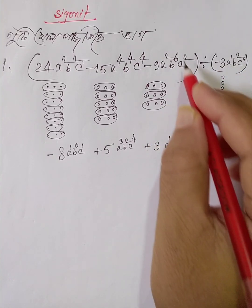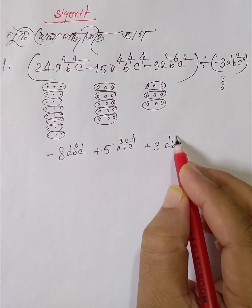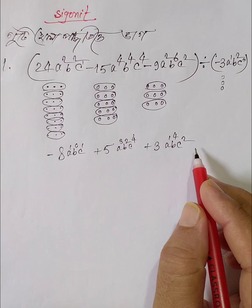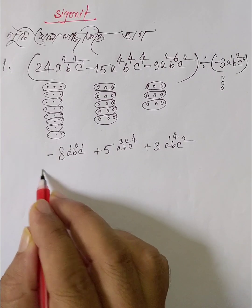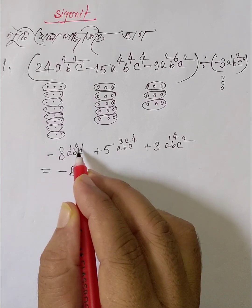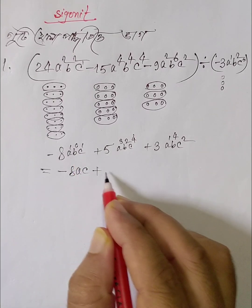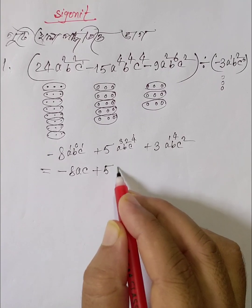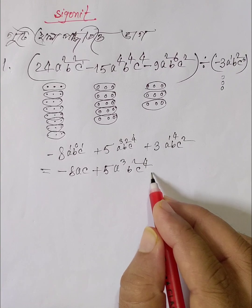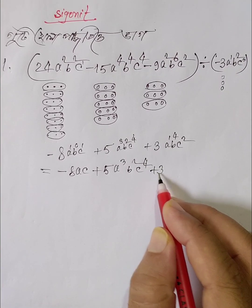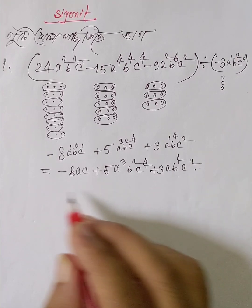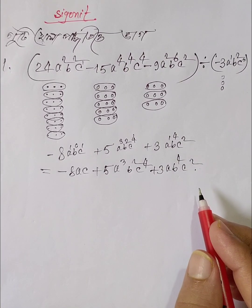Counting: 1, 2, 2, 2, 4, 2, 2, 2. Final result: 8ac times b to the power 0 and 1, plus 5a-cubed b-squared c to the power 4, positive 3ab to the power 4 c-squared. This is our final answer. Right.